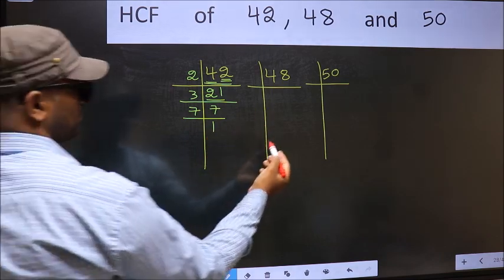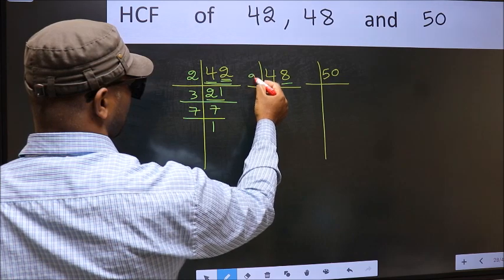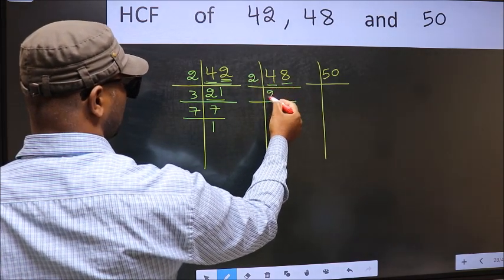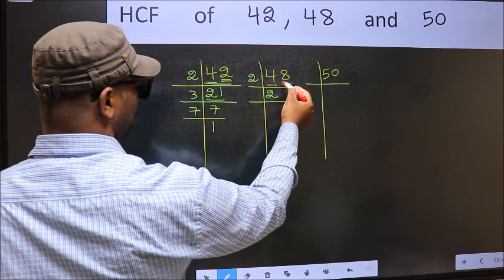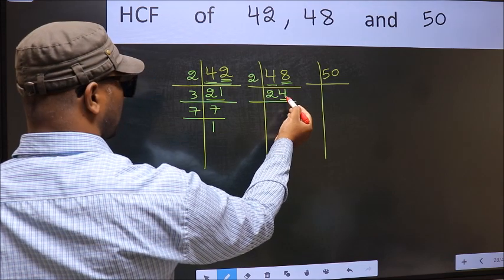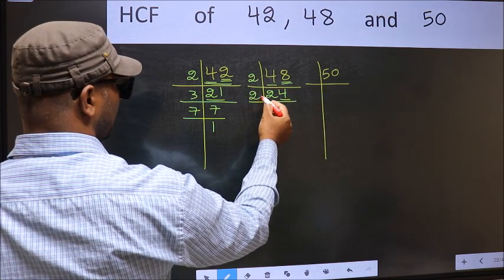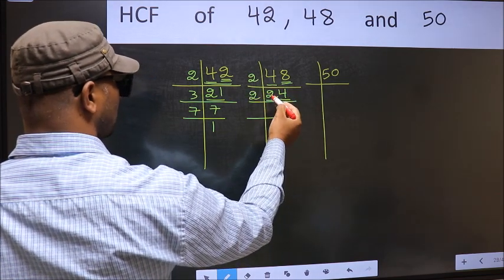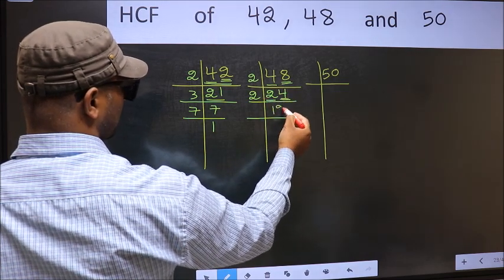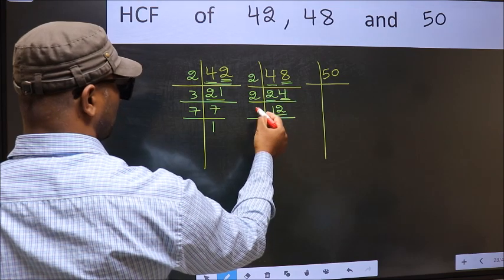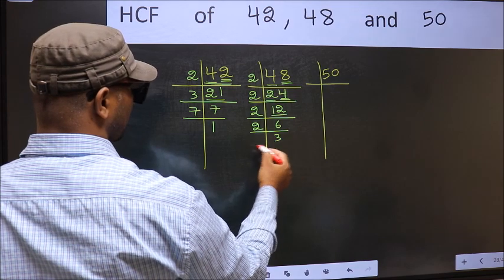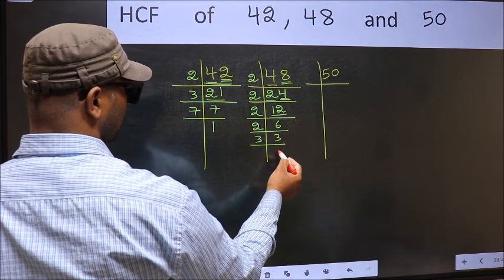Now the other number. Last digit 8 is even, so take 2. First number 4. When do we get 4 in 2 table? 2 twos, 4. The other number 8. When do we get 8 in 2 table? 2 fours, 8. Now last digit 4 is even, so take 2. First number 2. When do we get 2 in 2 table? 2 ones, 2. The other number 4. When do we get 4 in 2 table? 2 twos, 4. Now 12 is 2 sixes, 12. 6 is 2 threes, 6. 3 is a prime number, so 3 ones, 3.